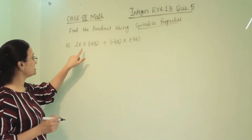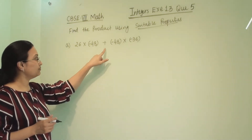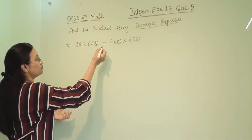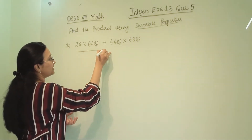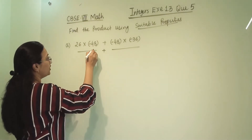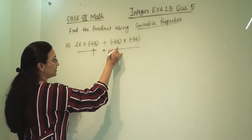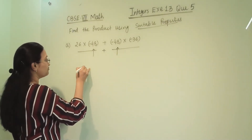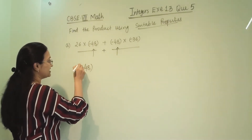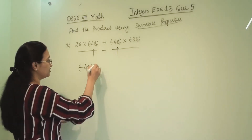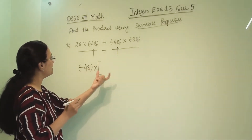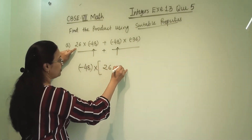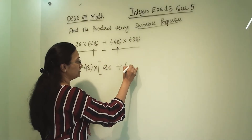The first problem is 26 × (-48) + (-48) × (-36). We have one term plus another term, and in both terms one number is common — that is -48. So we can take out -48 as a common integer. Into the bracket, what will be remaining? It is going to be 26 + (-36).